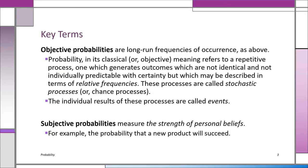The definition of the probability of an event I just gave you is called an objective probability — a mathematical probability based on long-run frequencies of occurrence. It's also considered the classical meaning of probability. We're referring to a stochastic process: a repetitive process where there are probabilities involved.